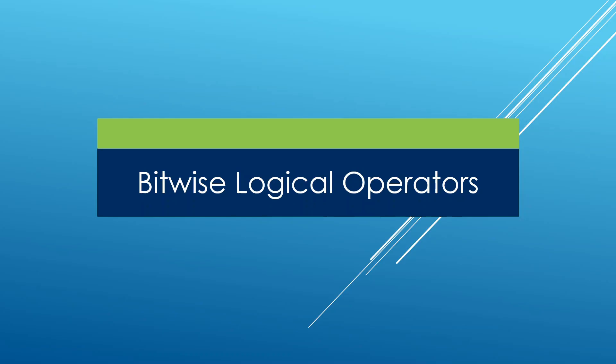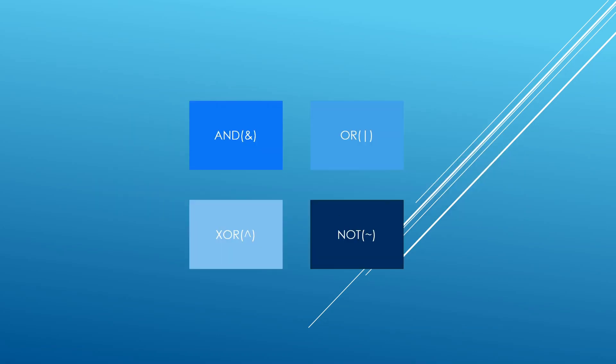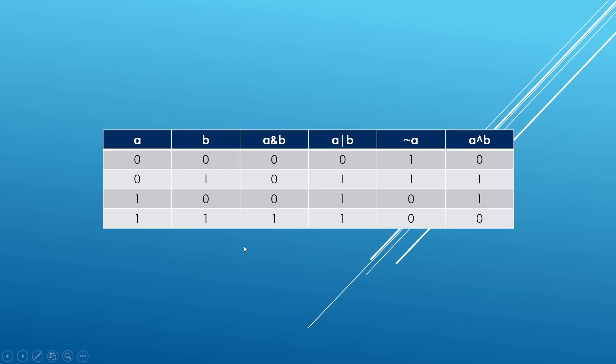In this lecture, we're going to learn about bitwise logical operators. These are mostly the same logical operators we have learned about before, but they are going to be working at the bit level. So we're going to be ANDing bits, ORing bits, XORing bits, and NOTing bits.